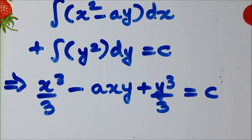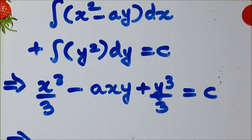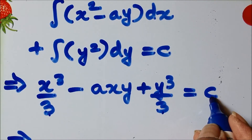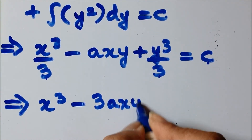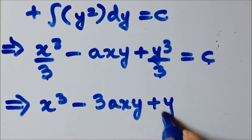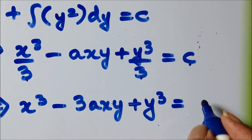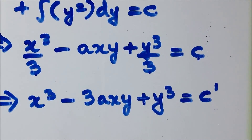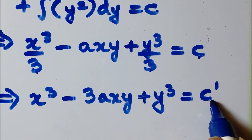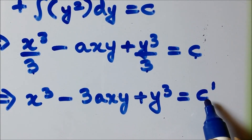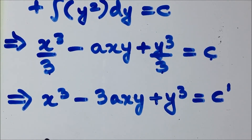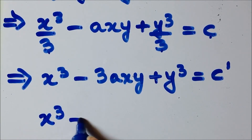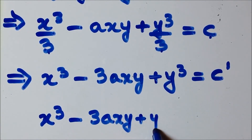This is the solution of the exact differential equation. You can do one more step: take all constant terms to the right hand side and remove the denominator by cross multiplication. So this gives x cube minus 3axy plus y cube equals 3c. Since 3c is still a constant, you can write it as c or introduce a new constant c dash. So the final answer is: x cube minus 3axy plus y cube is equal to c.